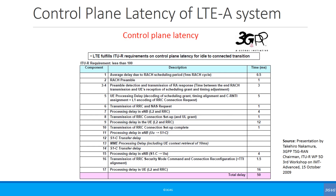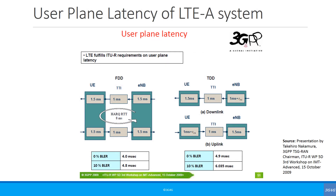When LTE-Advanced was defined back in 2009, the IMT-Advanced requirement was for 100 ms control plane latency. A 3GPP calculation showed the calculated delay to be 50 ms in the LTE system. Similarly, IMT-A defines the user plane latency to be 10 ms, and the 3GPP calculation shows it will be less than 5 ms in the case of zero block error rate.